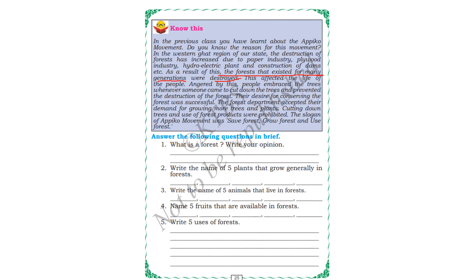Answer the following questions in brief. What is a forest? A forest is a big place where you get so many things — medicinal things like neem and trees used for making wood. Now, write the name of five plants that grow generally in forests. Some plants like grass will grow in the forest, and so will some other plants.